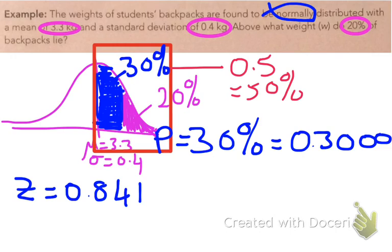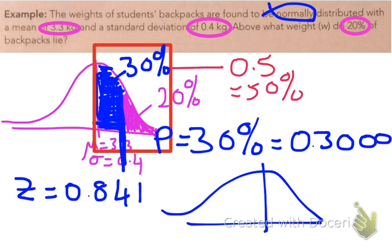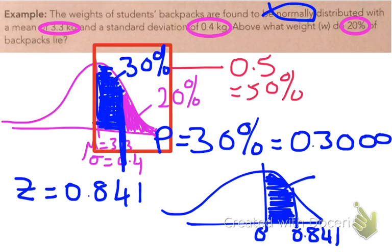So that tells me that this point here on my scale, equivalently on a z-distribution with a mean of 0, is going to be a value of 0.841. So 0.841 standard deviations above the mean is such that that area I'm coloring in there is 30%.